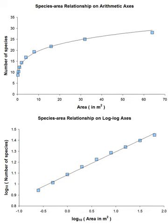The species-area relationship for mainland areas will differ according to the census design used to construct it. A common method is to use quadrats of successively larger size, so that the area enclosed by each one includes the area enclosed by the smaller one — i.e., areas are nested. In the first part of the 20th century, plant ecologists often used the species-area curve to estimate the minimum size of a quadrat necessary to adequately characterize a community. This is done by plotting the curve, usually on arithmetic axes, and estimating the area after which using larger quadrats results in the addition of only a few more species. This is called the minimal area.